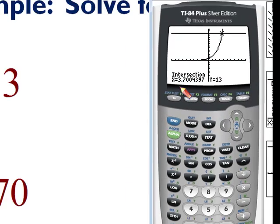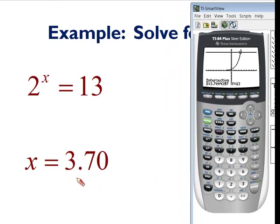So x equals 3.7004 looks pretty close to what we have here, 3.70. If we were to round this to the nearest hundredth, we'd be okay. So we've just solved this equation for x two ways. We did it graphically by finding the intersection of both sides of this equation, and we also solved this for x by using the property of logarithms.